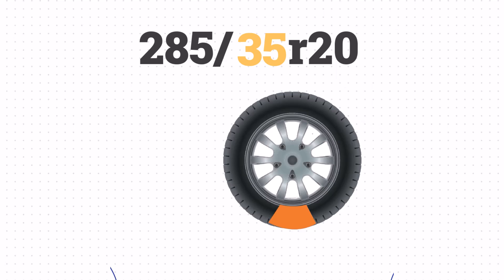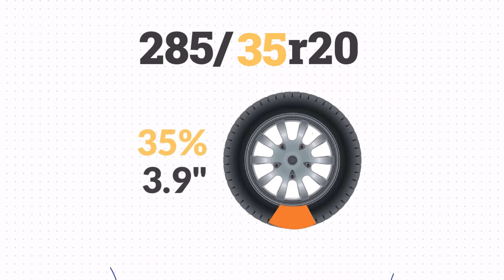Then we have the aspect ratio. This number represents the size of the sidewall compared to the section width. The 35 in this case means that the sidewall is 35% of the width, or approximately 3.9 inches.